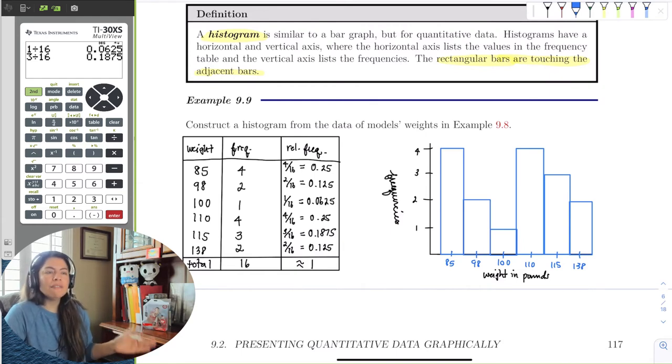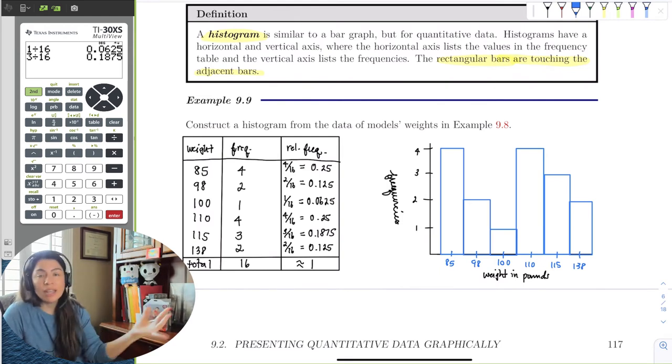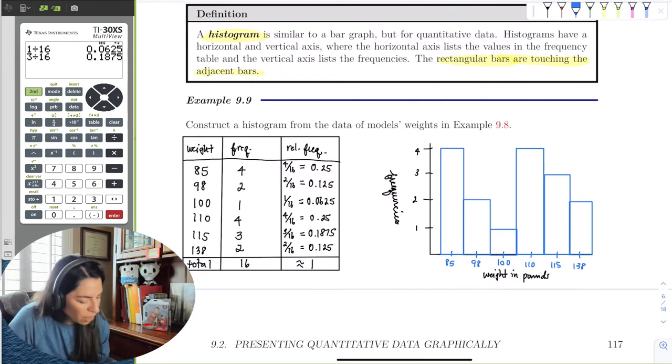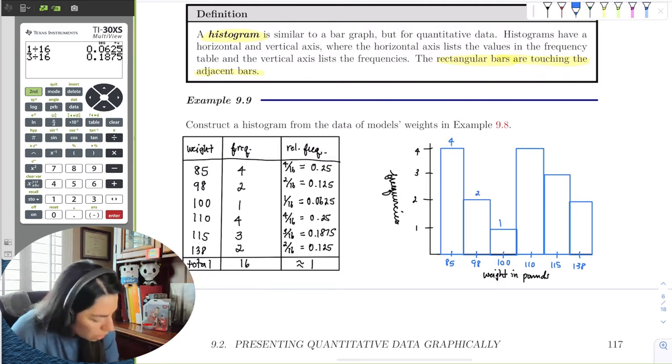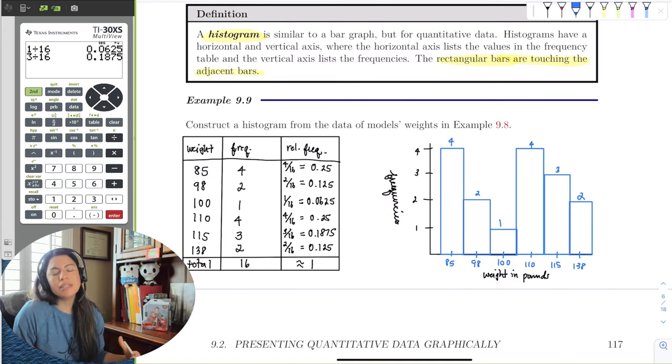But essentially, all the difference is that the bars will be touching. Why? Because 85, 86, 87, 88, 98, they all go in sequence. They all blend together. They're not categories. Weight is continuous. I can be 102.1 pounds. So 155.6 pounds. And then if you wanted to, you could put the numbers on top, like 4, 2, 1, 4, 3, 2. It's up to you, but this is sufficient. Again, we don't really do these by hand. We let technology do all the hard work.